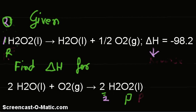So if we reconcile these two differences, we are going to derive this equation from this. What we have to do: first we have to double it, and then reverse it, change the direction.